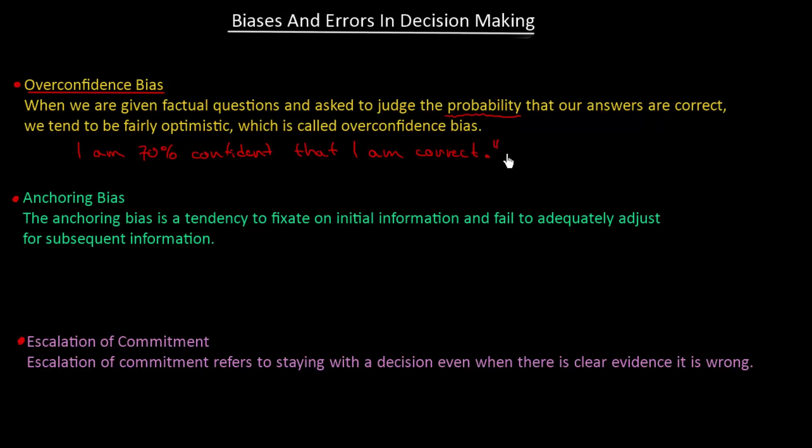Researchers have done a lot of experiments on this topic. When someone gives a number such as 70%, the truth is that this person is most likely only correct in 50% of situations. We tend to have too high confidence in whether we are correct about things.